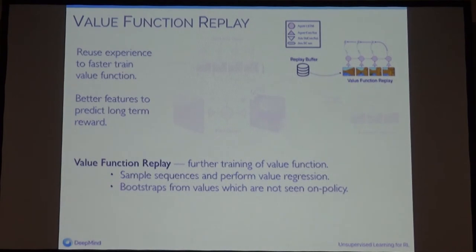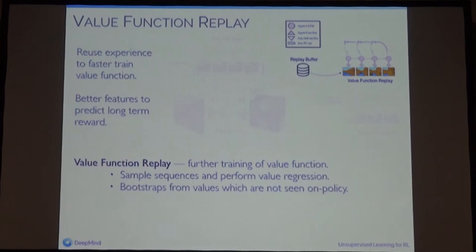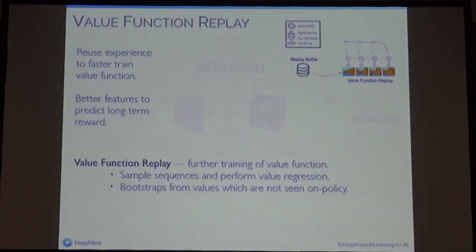The final auxiliary task is value function replay — a simple idea to reuse the experience in the replay buffer to more quickly train the value function. A better value function means a better critic and better estimates for the policy gradient. We just sample sequences from the replay buffer, perform value regression, and many extra iterations of this help promote value iteration and train features that predict long-term rewards.